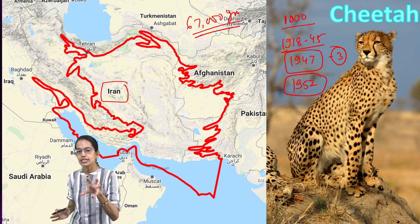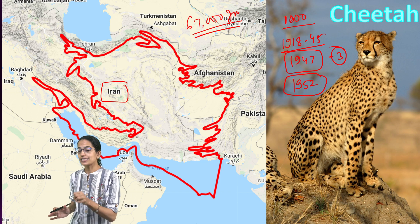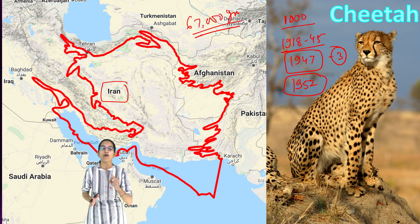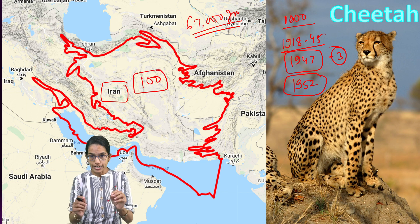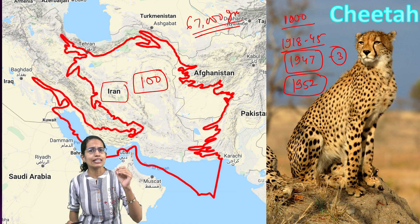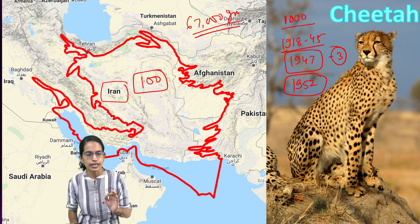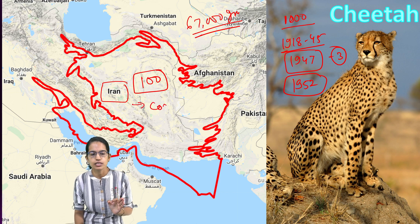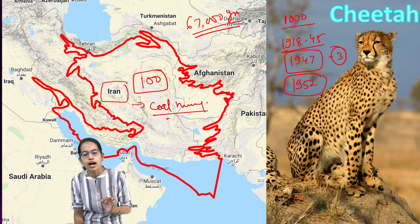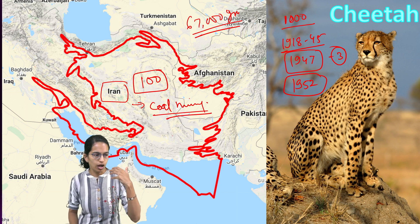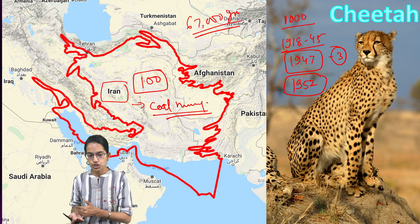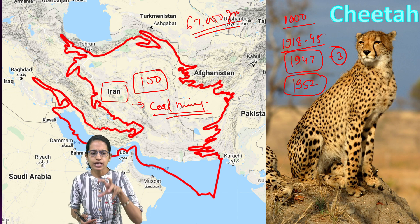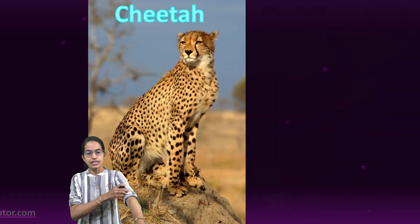Before we dive into the differences, let's understand one important thing: why the population of Asiatic cheetah is declining significantly. One important reason is the region of Iran where they are conserved. It is believed that there are only around 100 wild Asiatic cheetahs, and they are classified under the critically endangered category of IUCN classification. Iran, the region where they are found, is a region where excessive coal mining is done. They are also exposed to diseases, hunting, and constant poaching, all of which have led to the constant decline of the Asiatic cheetah.